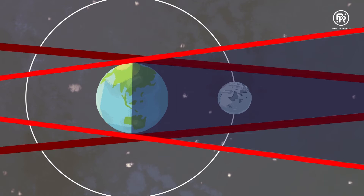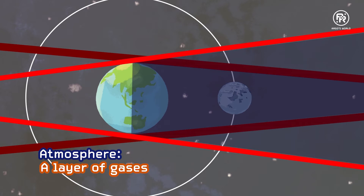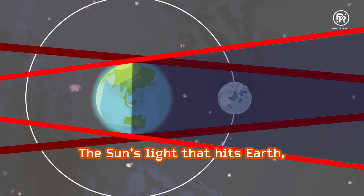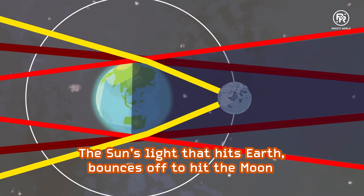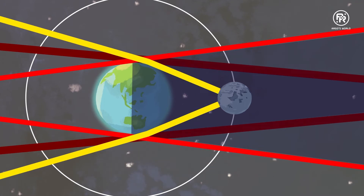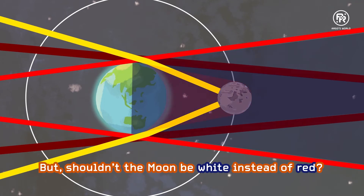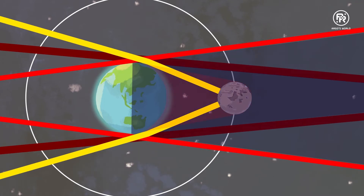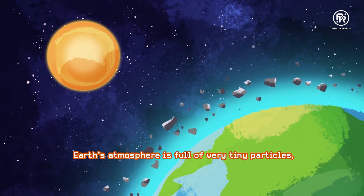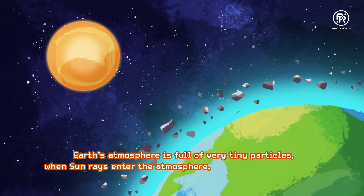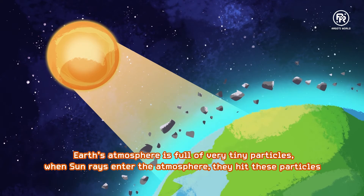The Earth casts its shadow on the Moon. You would think that the Moon would be thrown into darkness by Earth's shadow. However, Earth has an atmosphere, and the Sun's light that hits Earth bounces off to hit the Moon. But shouldn't the Moon be white? Earth's atmosphere is full of very tiny particles. When sun rays enter the atmosphere, they hit these tiny particles.